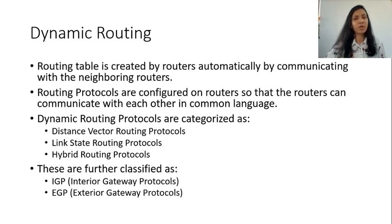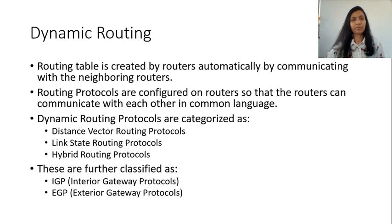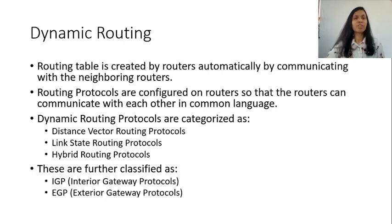The dynamic routing protocols are categorized into the following classes. You have distance vector routing protocol. In case of distance vector routing protocol, each and every router sends its own routing table to its immediately connected neighbor. When the router receives the routing table from its neighbor, it compares that table with its own and whatever new information is present in the neighbor's routing table, the router writes that information in its own routing table. That is how each router learns about new routes, and hence these protocols are also called routing by rumor.